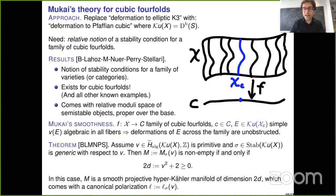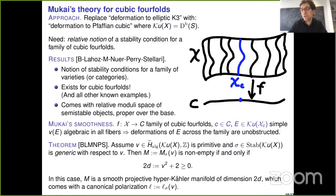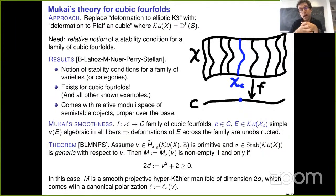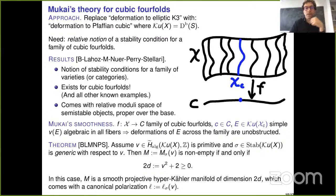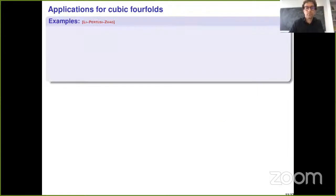The result is very similar to what we had for K3 surfaces: for a primitive Mukai vector and a generic stability condition, the moduli space is non-empty if and only if its expected dimension is greater than or equal to zero. In such a case, the moduli space is smooth, projective, and is a hyperkähler manifold deformation equivalent to a Hilbert scheme of points on a K3 surface, and comes with a natural polarization.